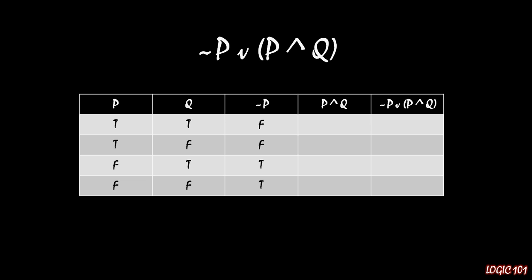Wherever P is true, not P is false, and wherever P is false, not P is true. And so that's exactly what we see there. We just have the inverse of the first column there and the third column for not P.